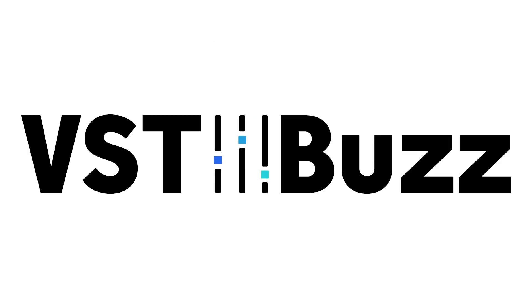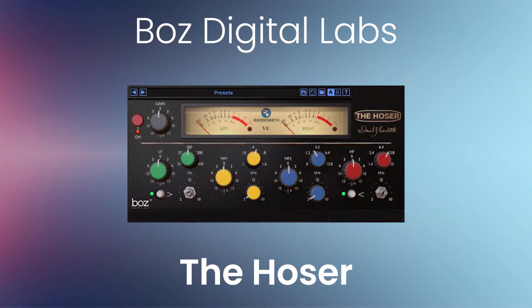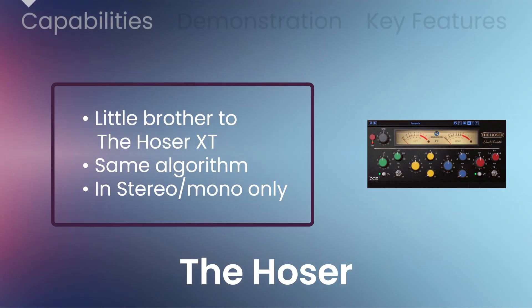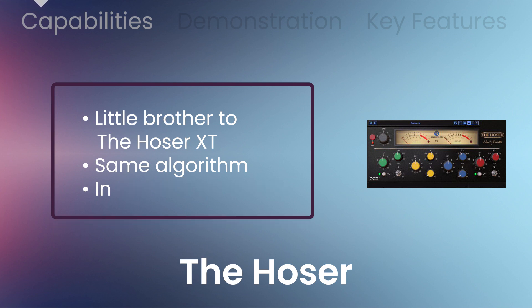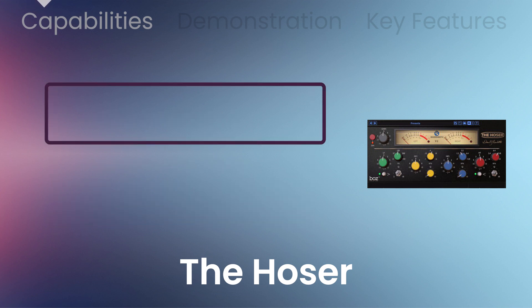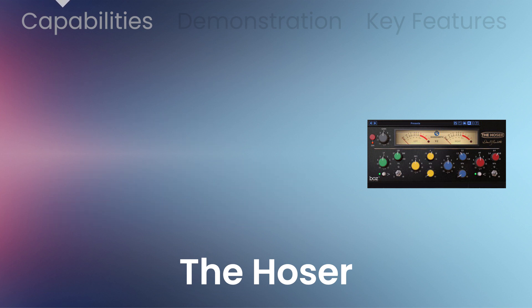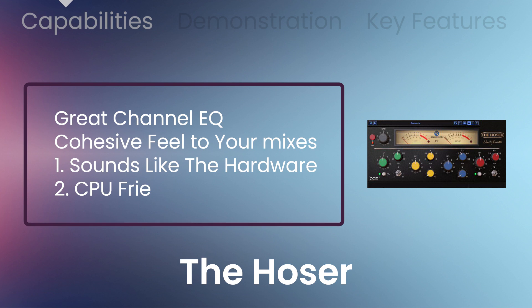VSTBuzz presents 70% off the Hoser by Bozz Digital Labs, the little brother to the Hoser XT that uses the same algorithm in a compact stereo or mono only format. This is the second in the series of David Bendeth's signature plugins, modeled off of a vintage Canadian hardware EQ unit.